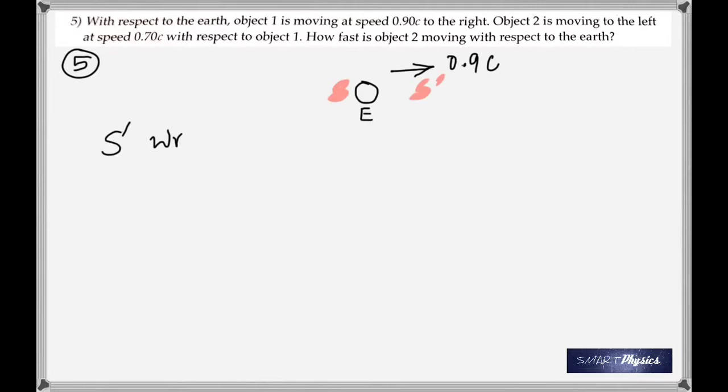Now, I may have to go back on what I said. In this case, when I read the question, it says, how fast is object 2 moving with respect to the earth? And in our equation, we have ux on the left side. So obviously, ux must be what we're going to find. ux is the speed of object 2 with respect to the earth. Therefore, in this case, earth has to be taken as the S prime frame, because ux is the speed with respect to the S prime frame.